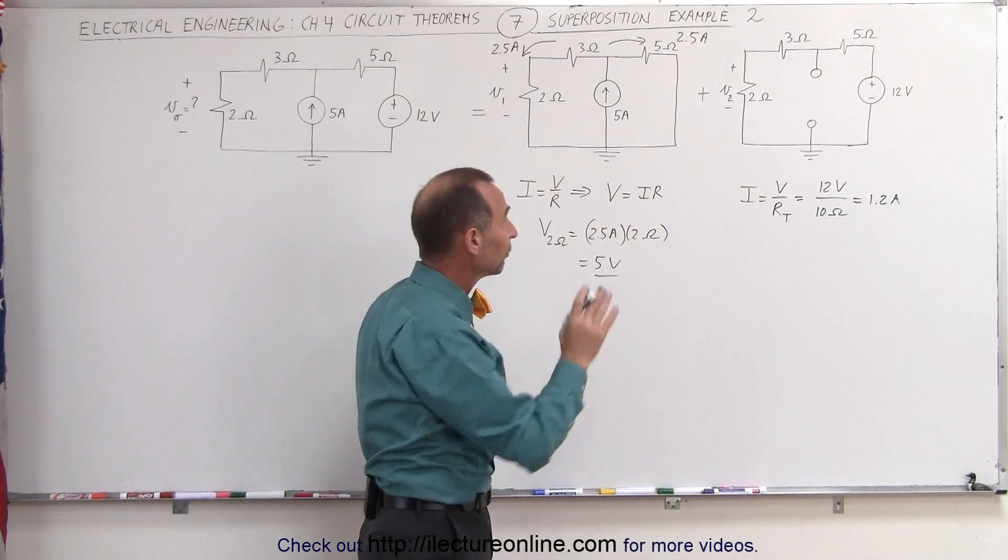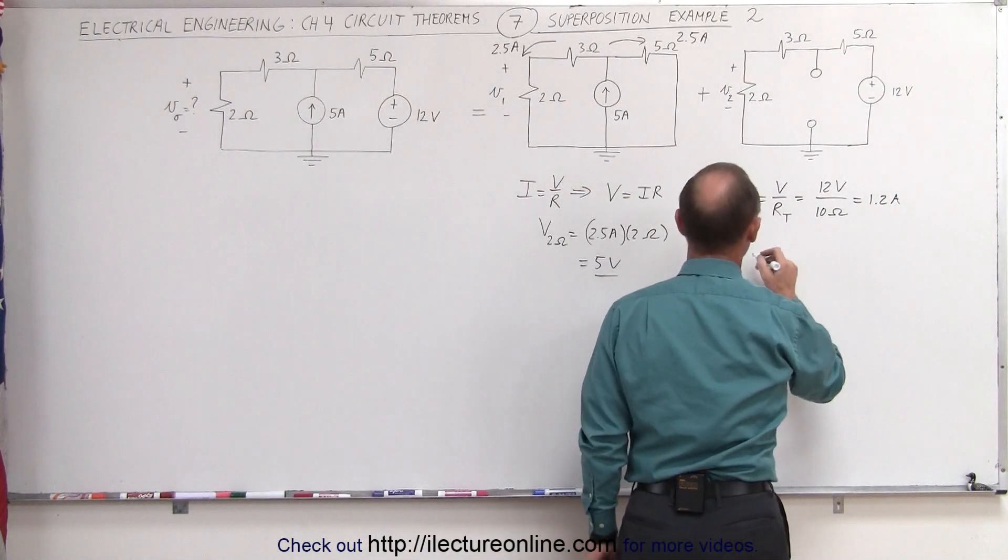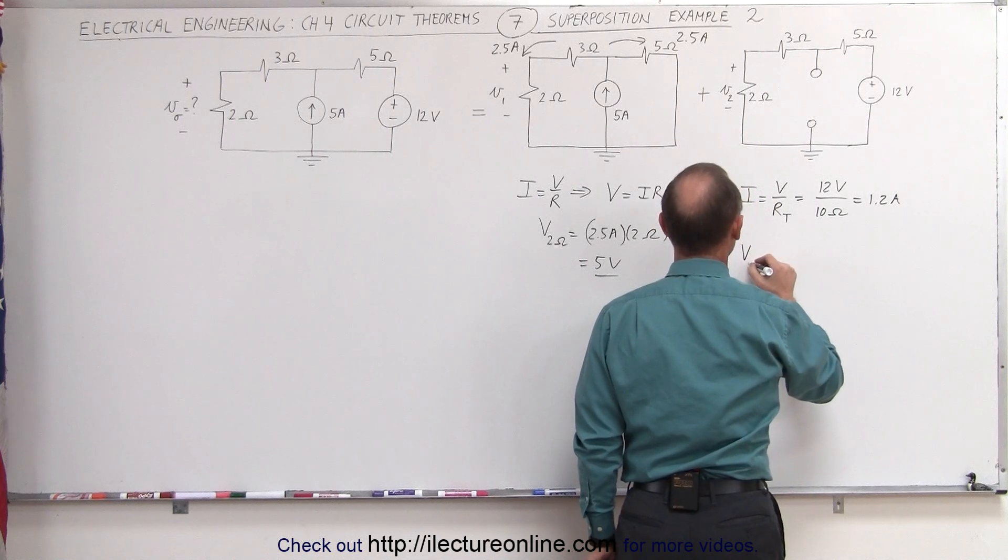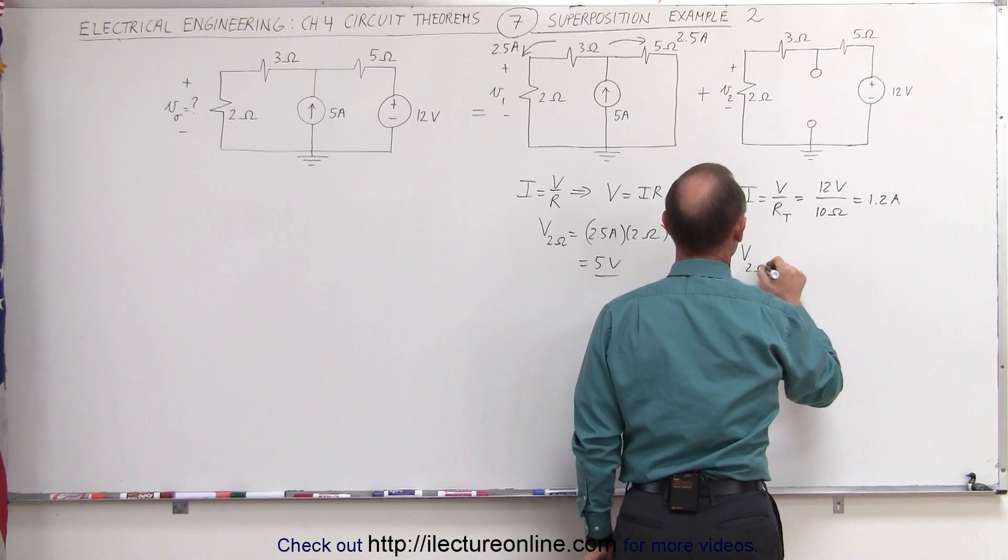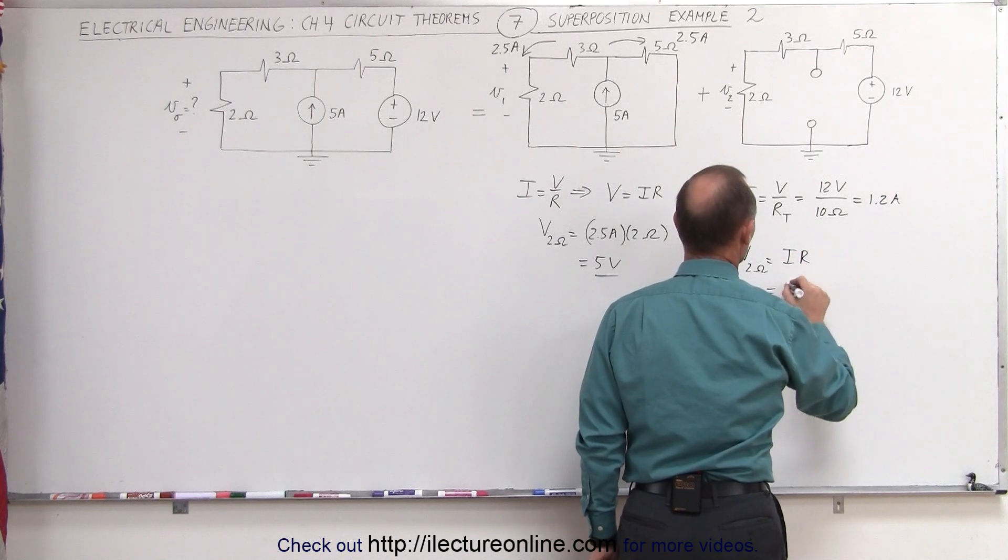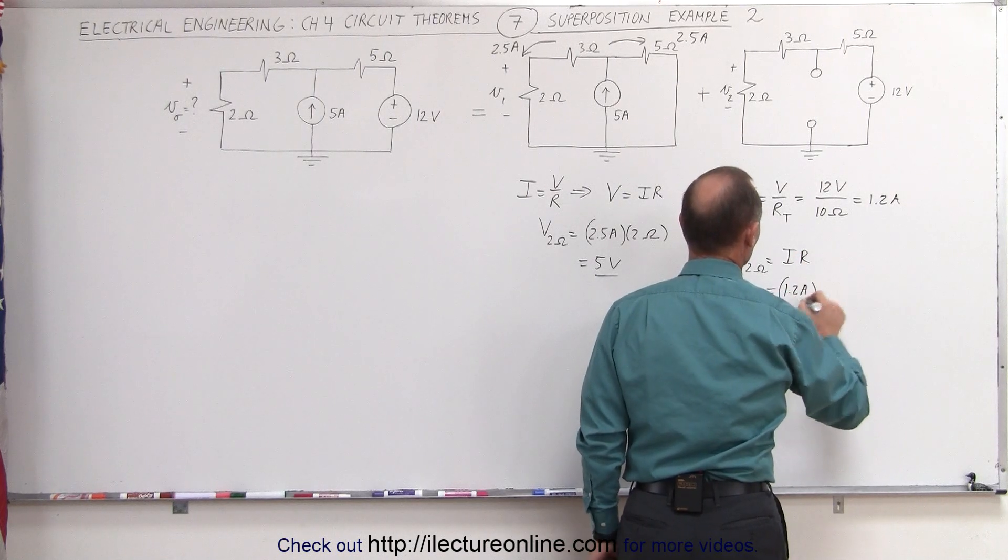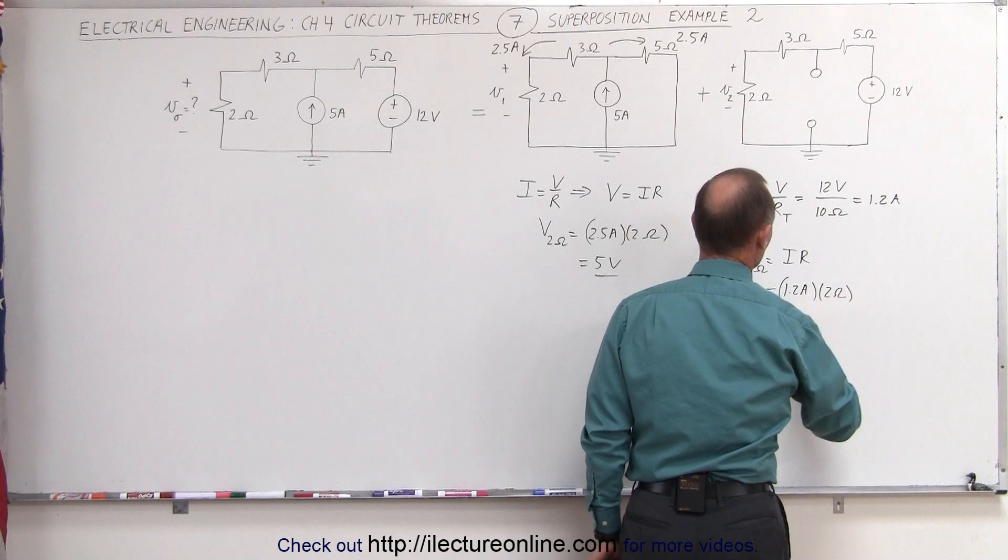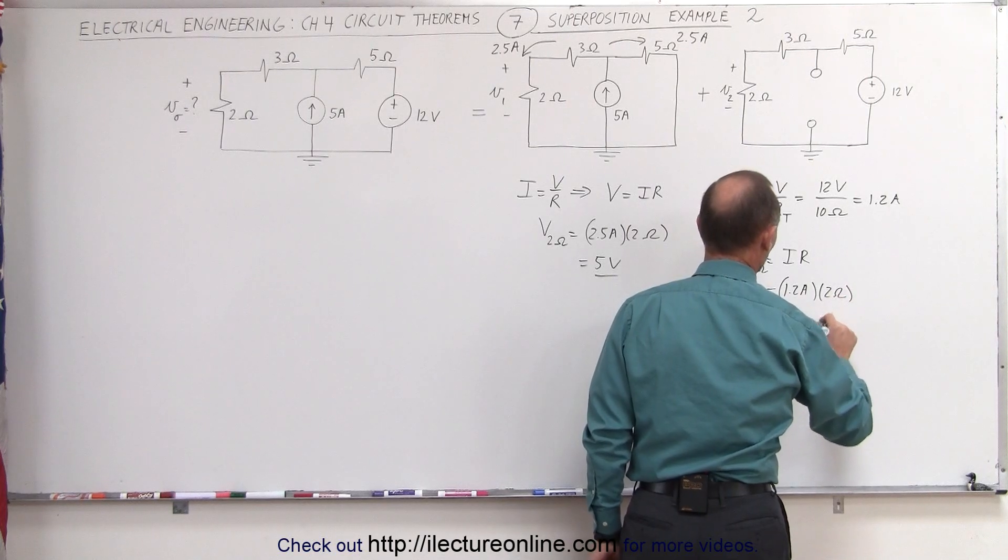We can now use that to find the voltage drop across the 2 ohm resistor. V across the 2 ohm resistor is equal to I times R, the current 1.2 amps, the resistance 2 ohms. This is equal to 2.4 volts.